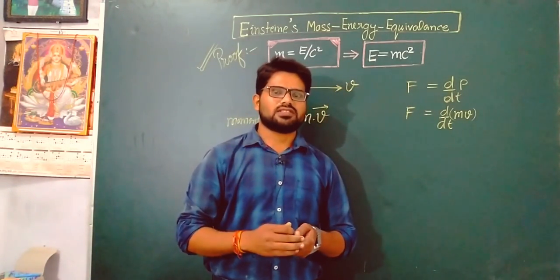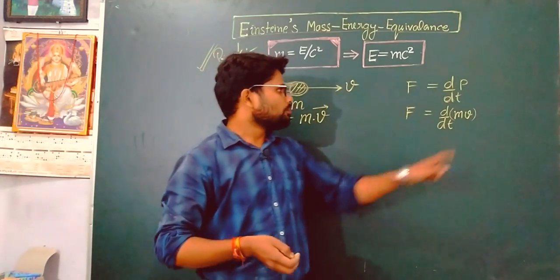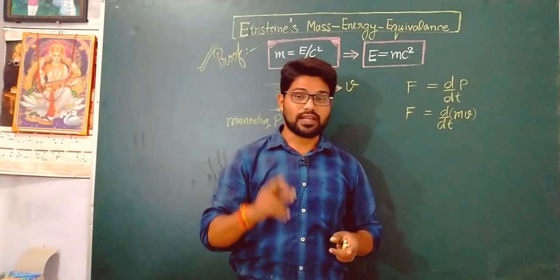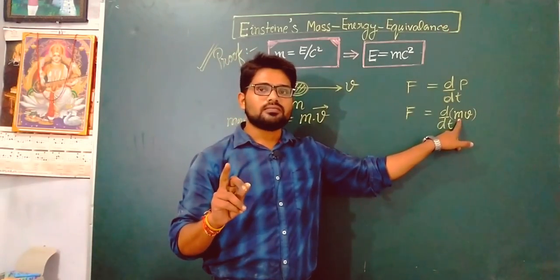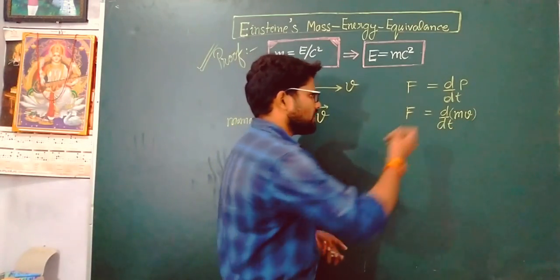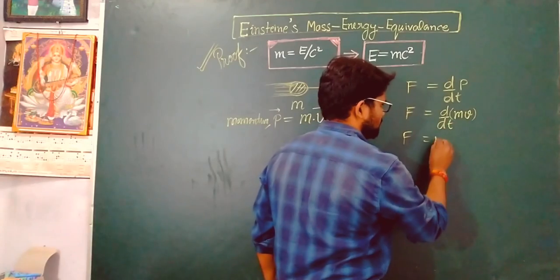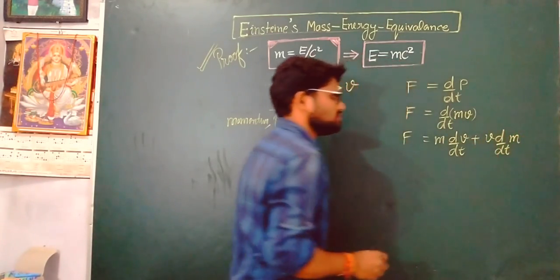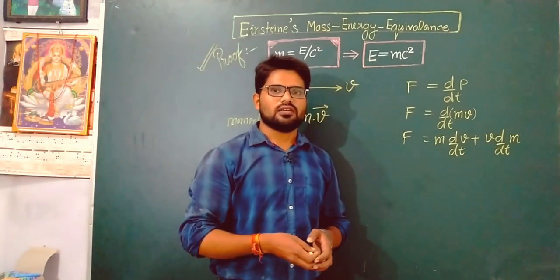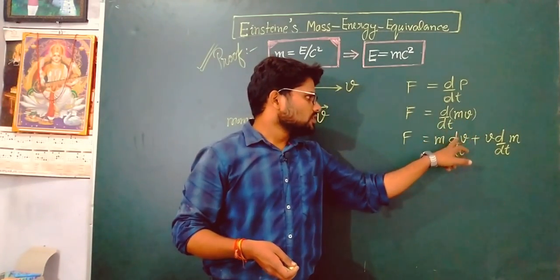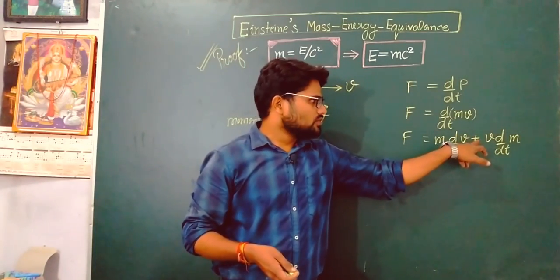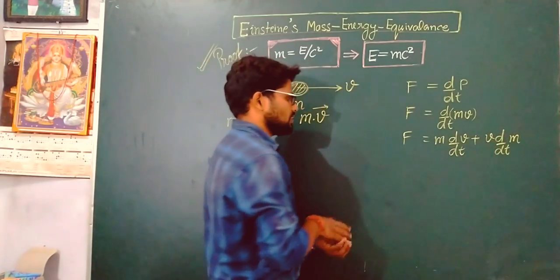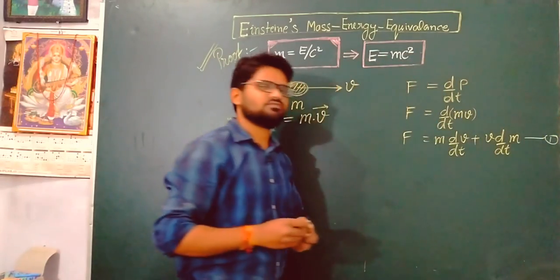In modern relativistic mechanics, both mass and velocity are variable — unlike Newtonian mechanics where mass was constant. So we differentiate keeping both mass and velocity as variable quantities. This gives: F equals m·(dv/dt) plus v·(dm/dt). Note this as equation number one — this is the force applied on the object.